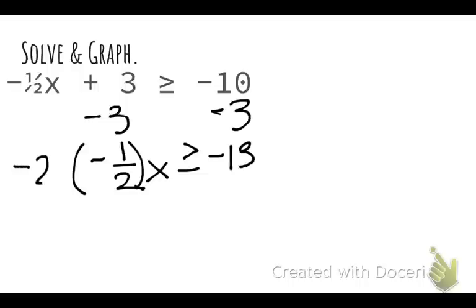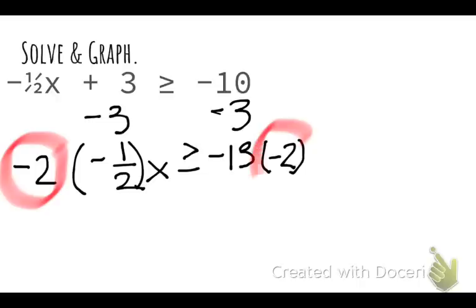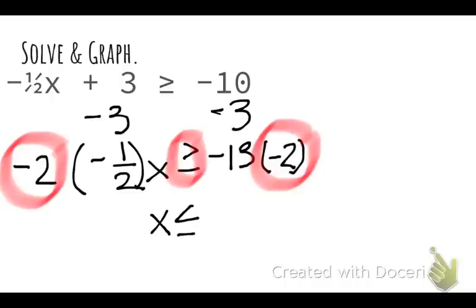Thinking back to that one rule about solving inequalities: when you multiply or divide by a negative value — which is exactly what I'm doing right here — you need to flip the inequality symbol. So when I simplify, I need to write x is less than or equal to positive 26. That means any value that's less than or equal to 26 will be a solution to this inequality.